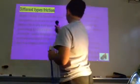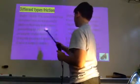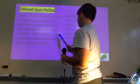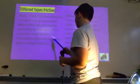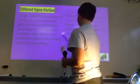Static friction is friction between two or more solid objects that are not moving according to each other. For example, static friction can prevent an object from sliding down a sloped surface.